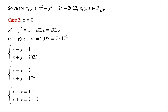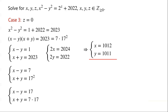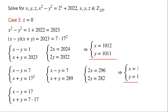For x minus y equals 1 and x plus y equals 2023: adding gives 2x equals 2024, subtracting gives 2y equals 2022. So x equals 1012, y equals 1011. For x minus y equals 7 and x plus y equals 289: adding gives 2x equals 296, subtracting gives 2y equals 282. So x equals 148, y equals 141.